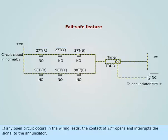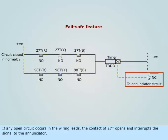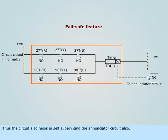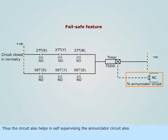If any open circuit occurs in the wiring leads, the contact of 27T opens and interrupts the signal to the annunciator. Thus, the circuit also helps in self-supervising the annunciator circuit.